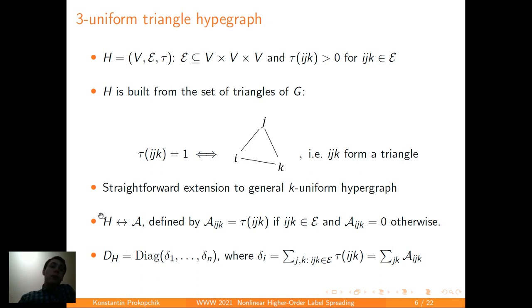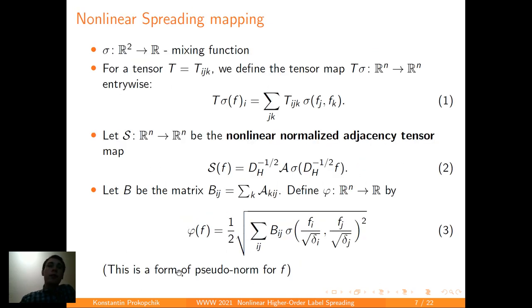Similar to the case of label spreading, we also denote the adjacency tensor here, and DH as diagonal matrix. Continuing with the notation, we have sigma, a mixing function, which in this case is a function of two variables that produces a scalar. And for any arbitrary tensor T, we define the tensor map T-sigma, which is a sort of an entry-wise multiplication of the two objects. We also define S as the nonlinear normalized adjacency tensor map. In a similar way we did for adjacency matrix, and define B matrix to define the pseudonorm phi of any function f.